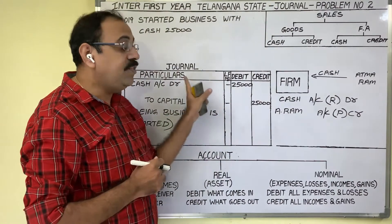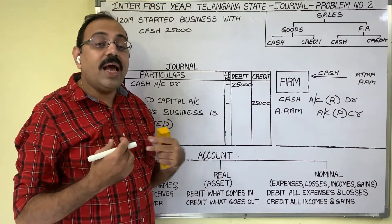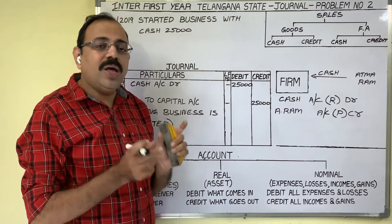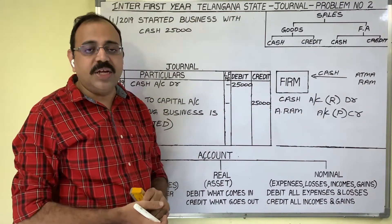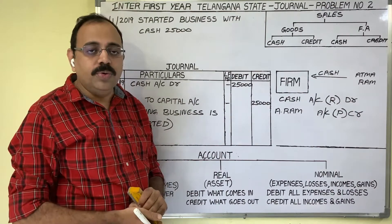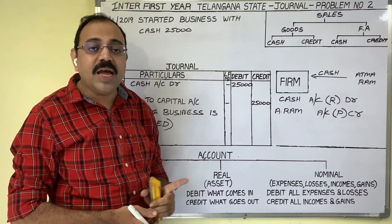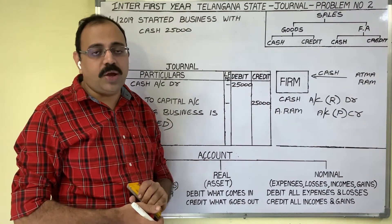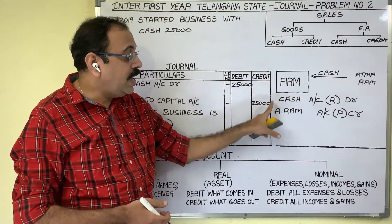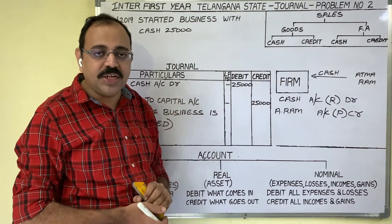Always remember, while writing journal entries, we should assume that we are working as an accountant under this firm. We should analyze each and every transaction from the firm's point of view. For writing journal entries, there are 3 steps. First is identification of 2 accounts. We identified the 2 accounts: cash account and Atmaram account. These 2 accounts we have in this present transaction.